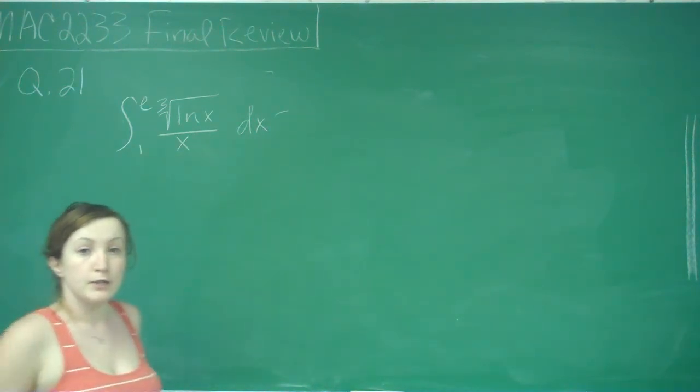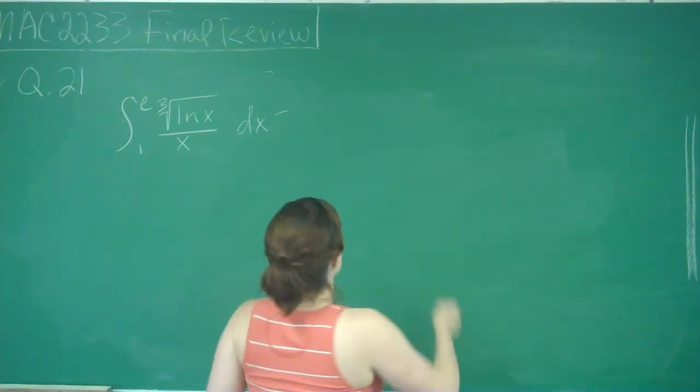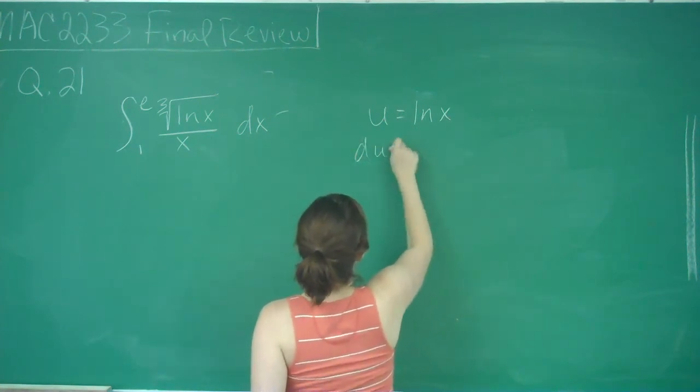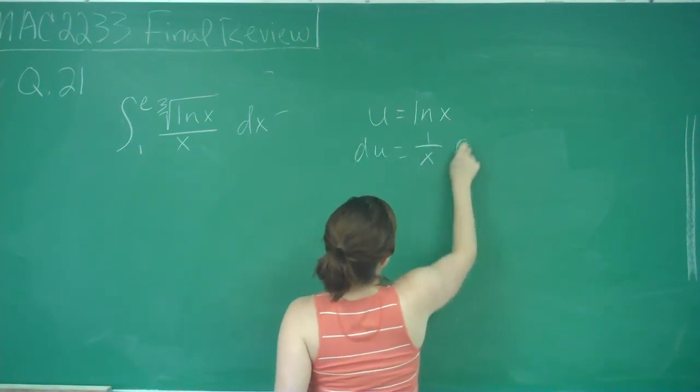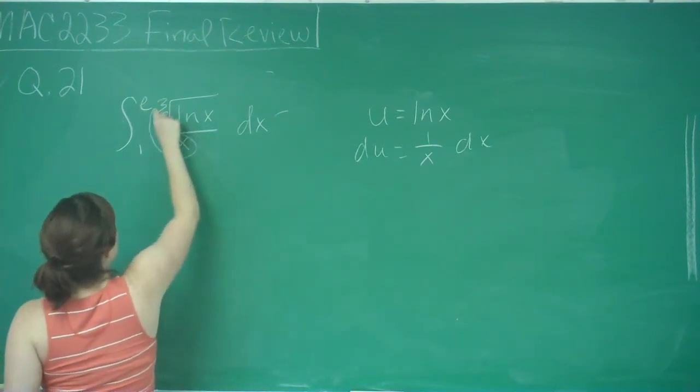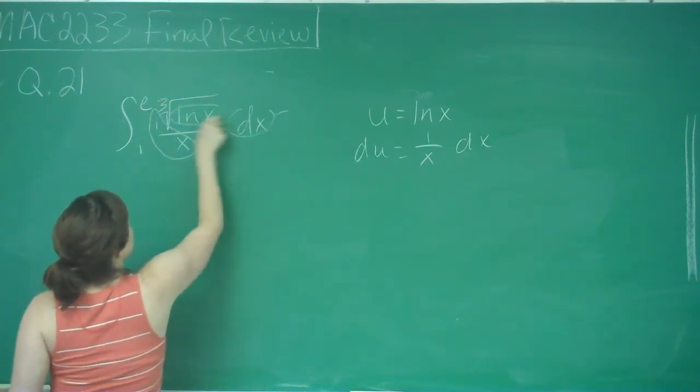So we're going to have to use u substitution, and I'm going to say that u is equal to ln x, therefore du is equal to 1 over x dx, which is good because I've got 1 over x dx, and this is my u.